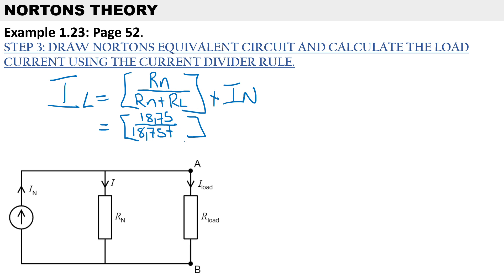Norton's current is 0.4 amps, so therefore the load current works out to 0.194 amps. We've solved for the load current through the load resistor utilizing Norton's equivalent circuit.